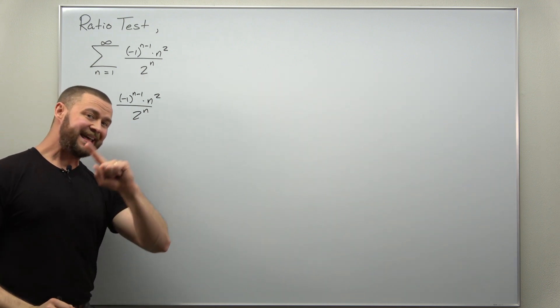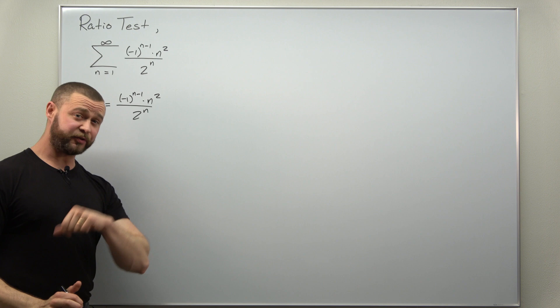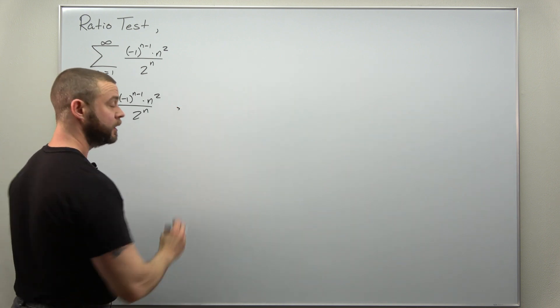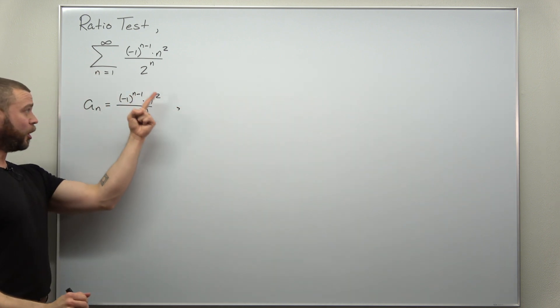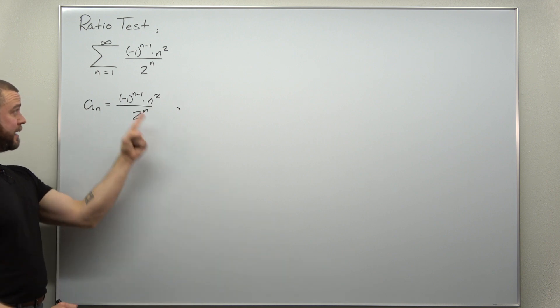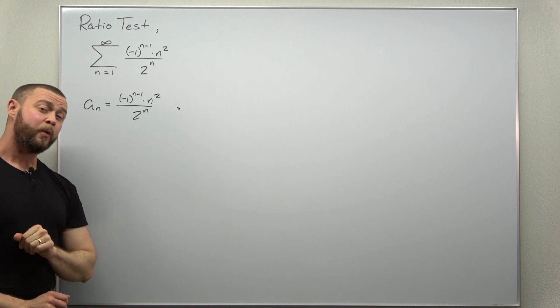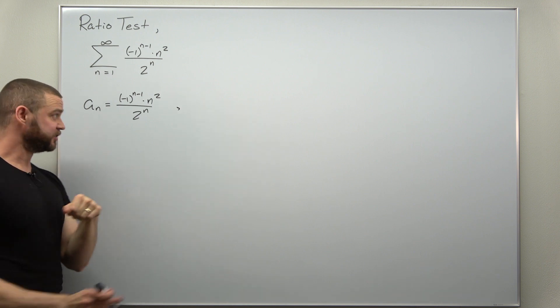Next, we need to increment and calculate a_{n+1}. To do that, we're just going to replace all n's, all three of them, in the negative one to the power and the n squared and two to the n. n is going to get replaced with n plus one.